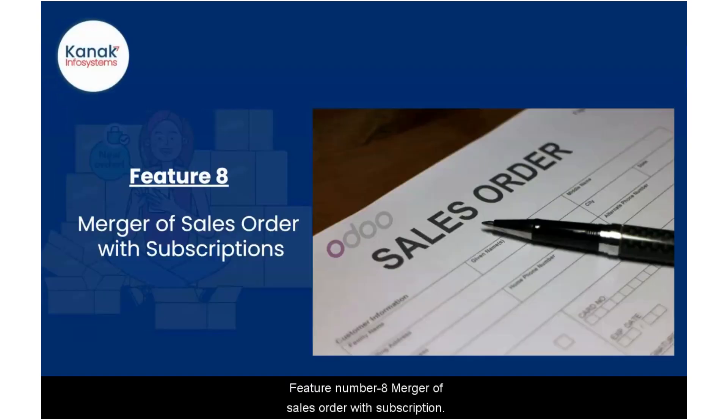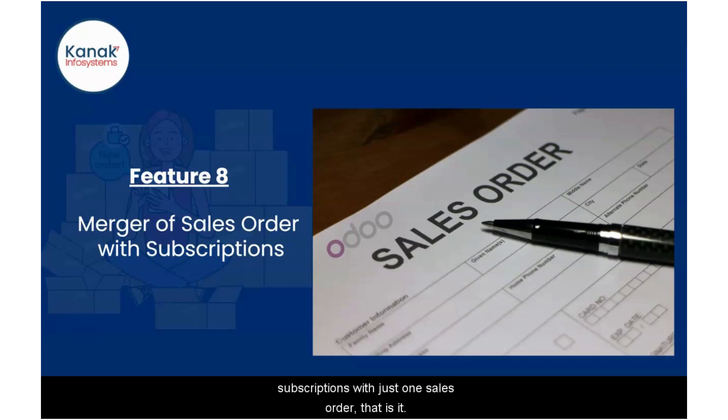Feature number eight: merger of sales order with subscriptions. This would only ease out the process and simplify your management when you can just plug in your subscriptions with just one sales order. And that is it — done.